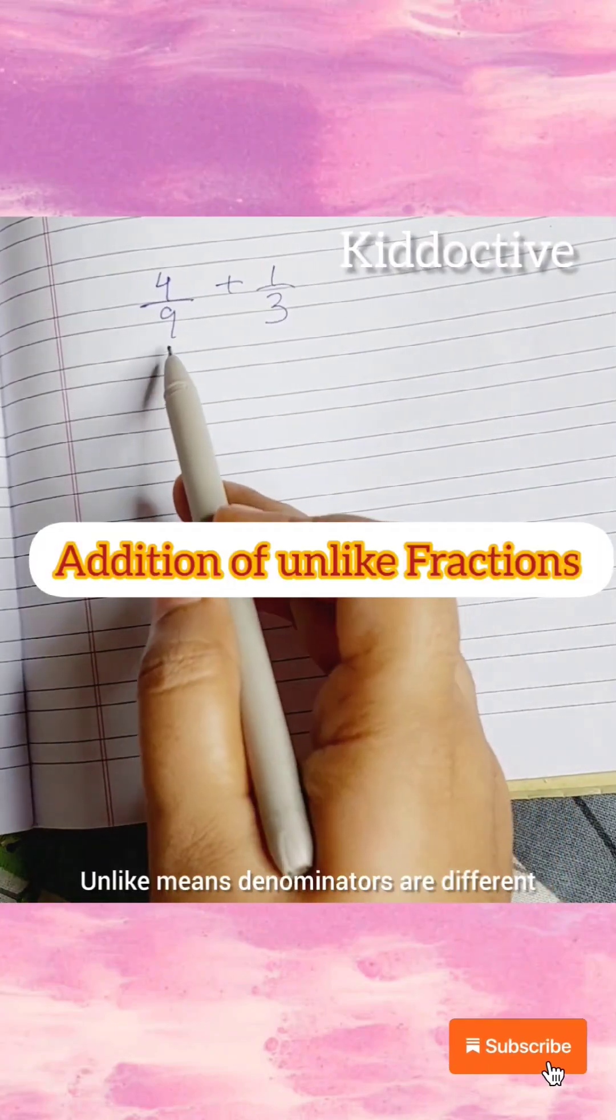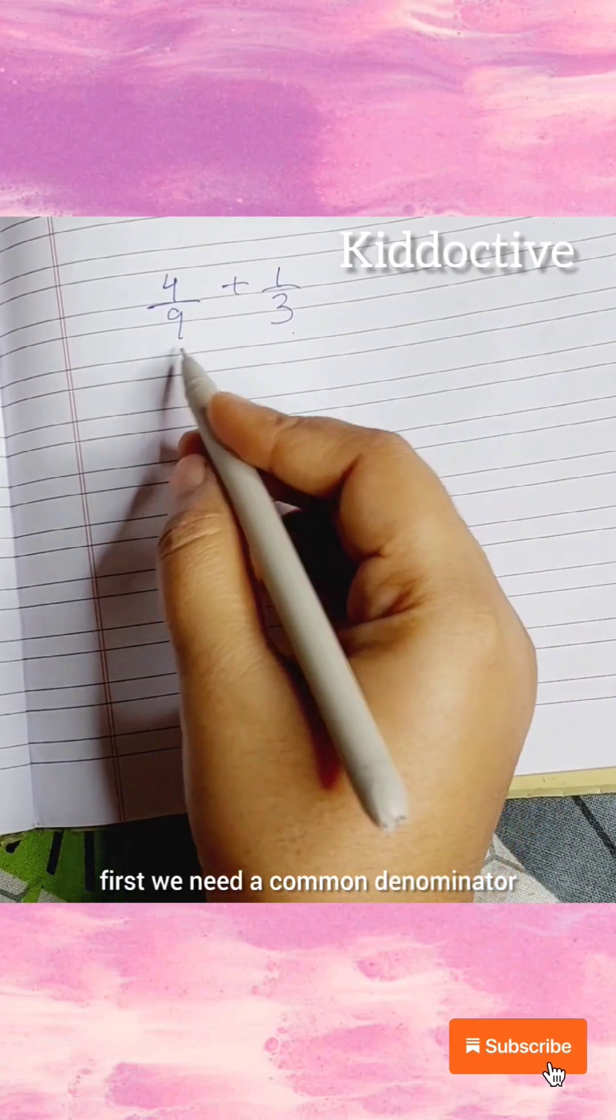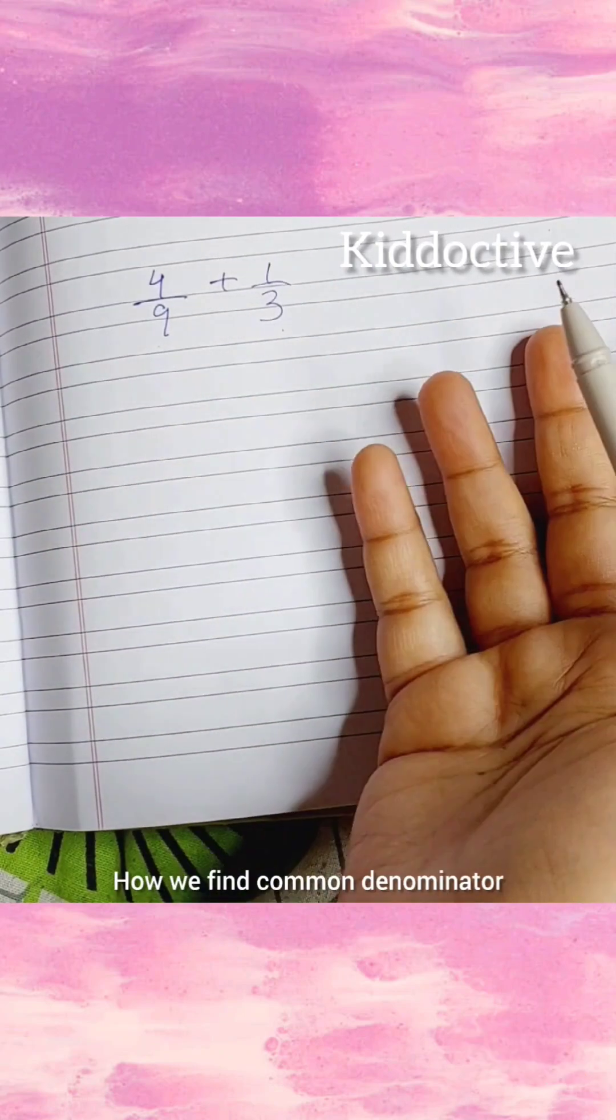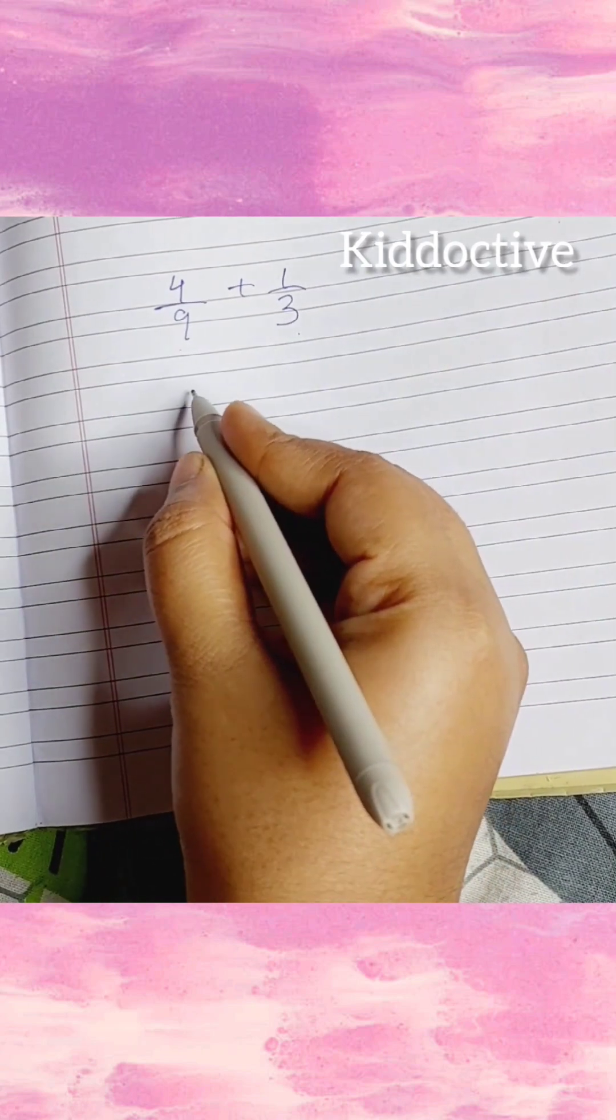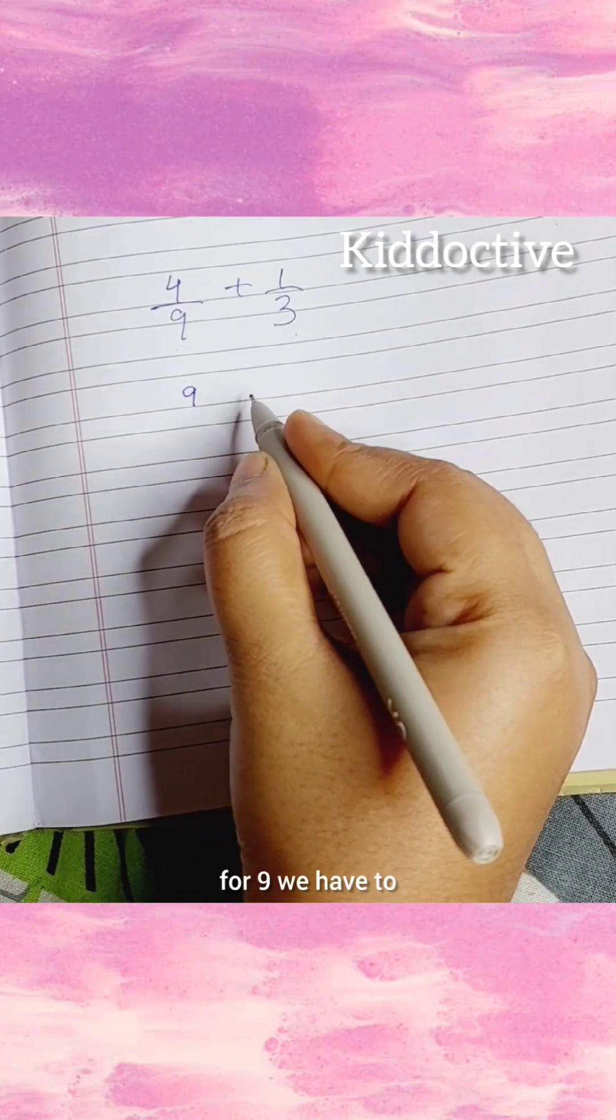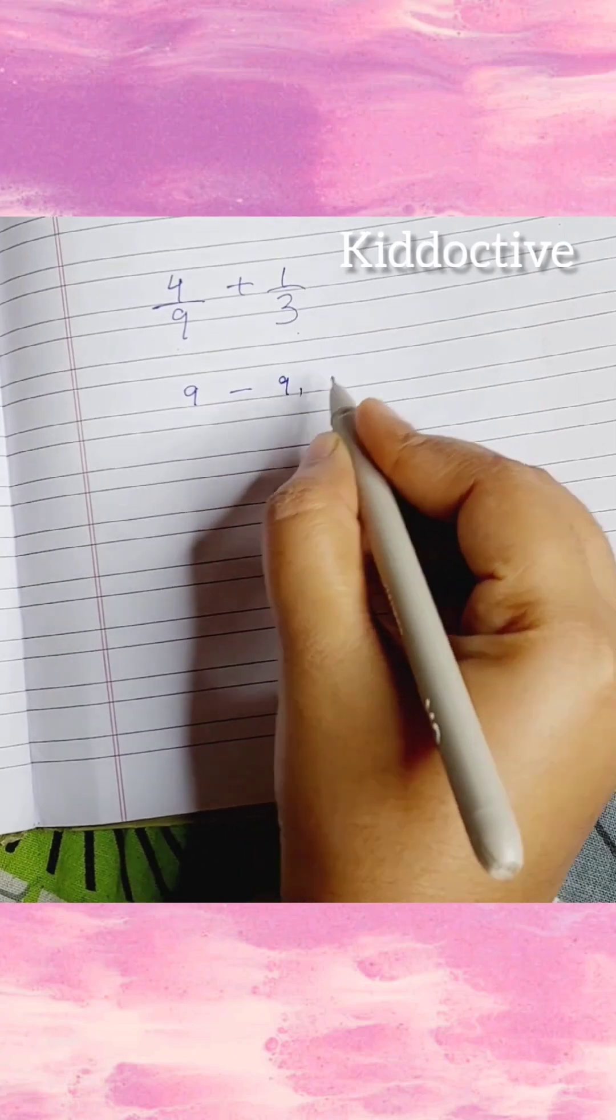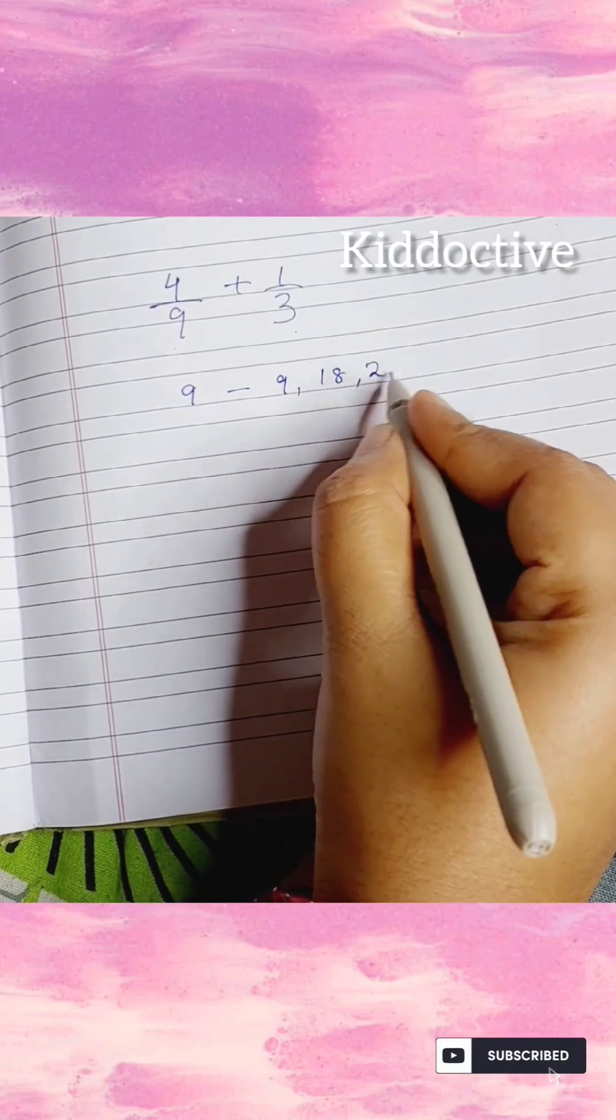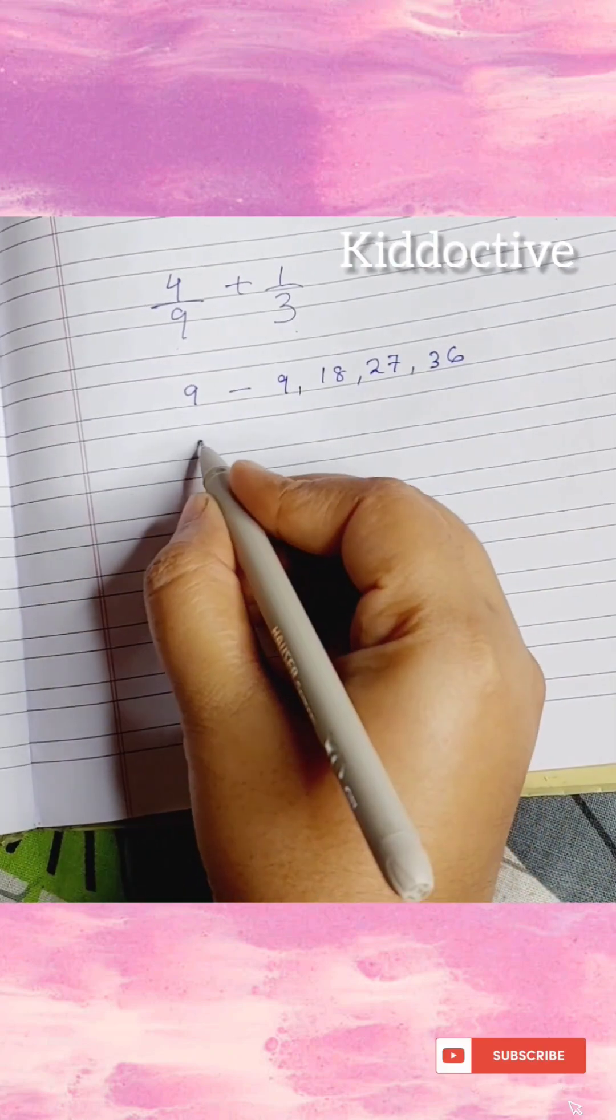Addition of unlike fractions. Unlike means denominators are different, so first we need a common denominator. How we find common denominator? We have to check what are the multiples. So here for 9, we have to find the multiples of 9. The multiples of 9 are 9, 18, 27, and 36.